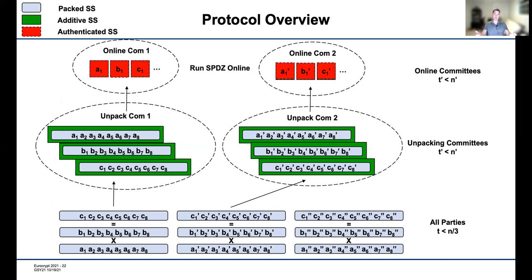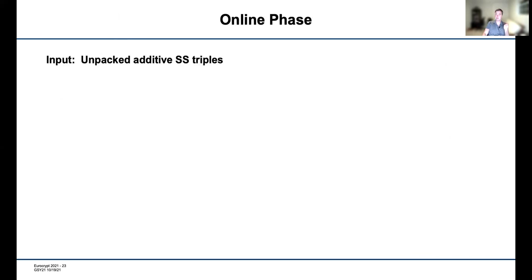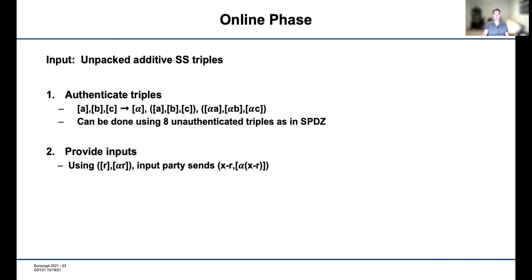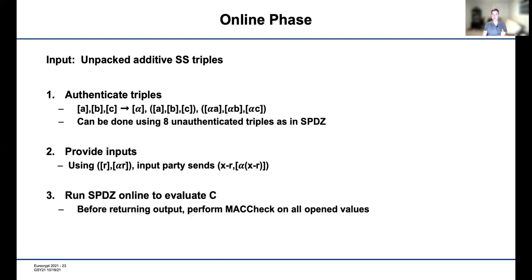Now we have unpacked additively secret-shared triples. We authenticate them using a standard technique from the SPDZ paper, which uses 8 unauthenticated triples to produce 1 authenticated triple. We handle inputs using the same portion of SPDZ, and then use the SPDZ protocol inside each of our committees to actually evaluate the circuit.